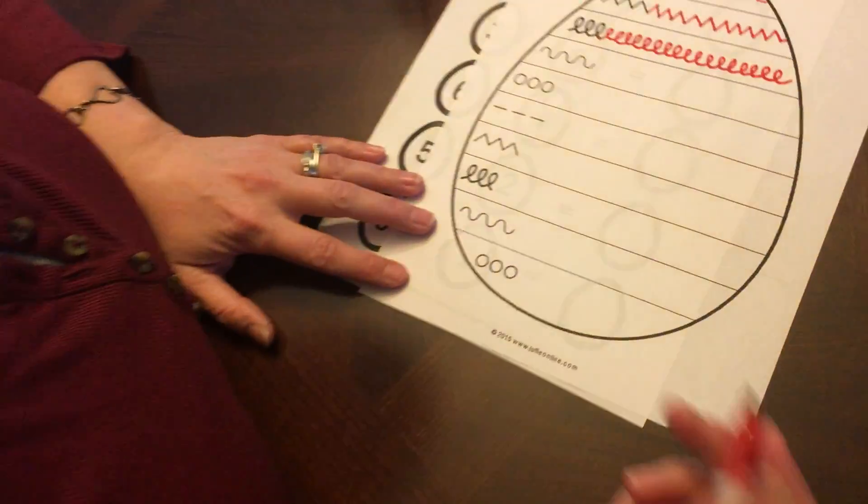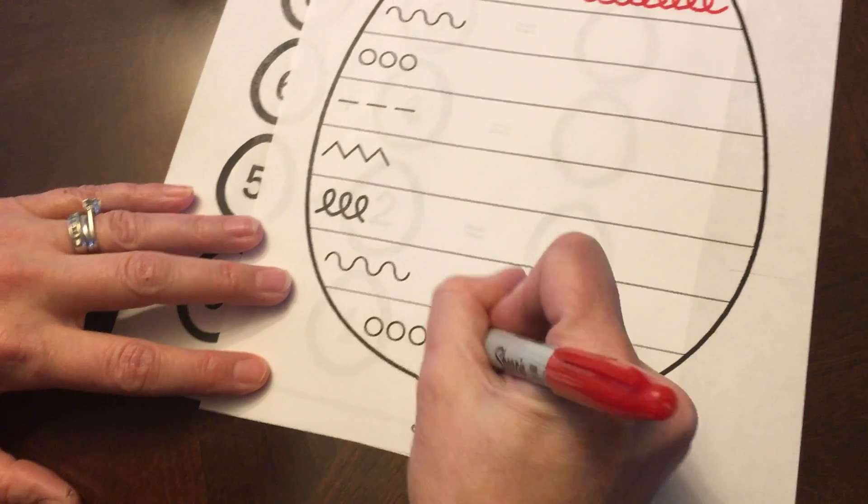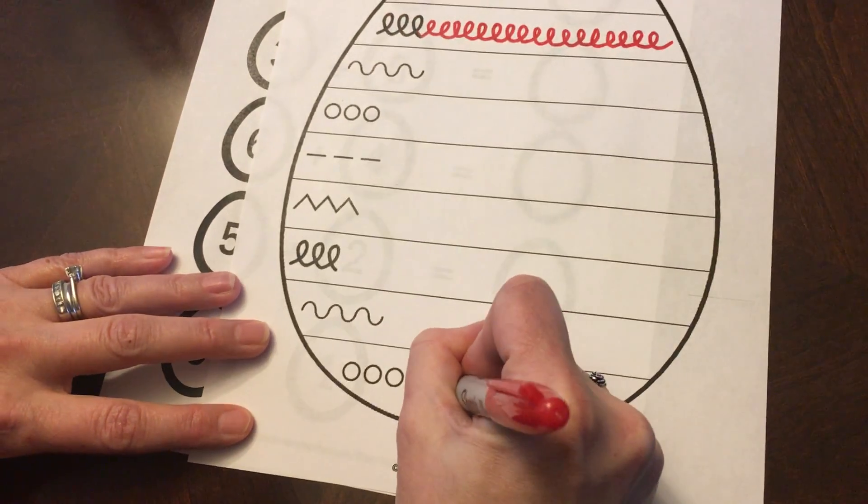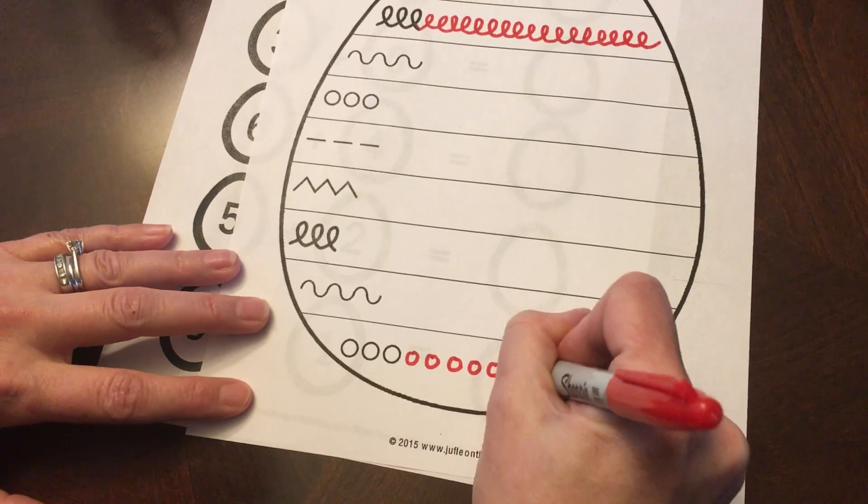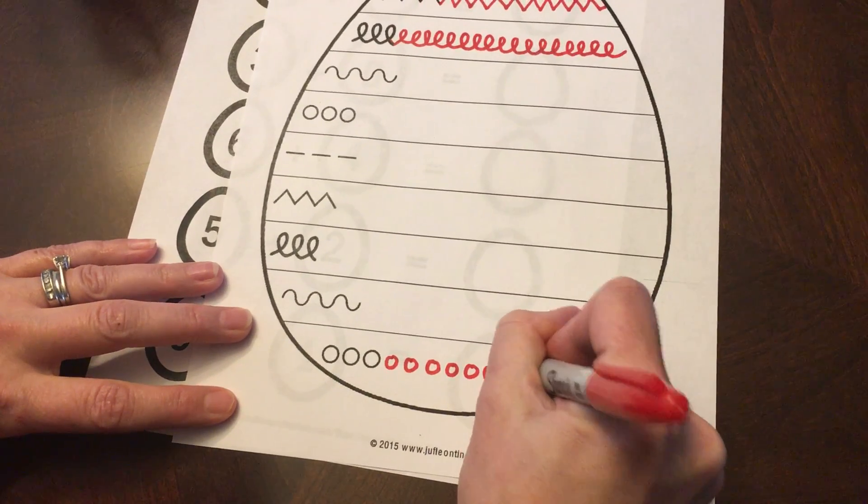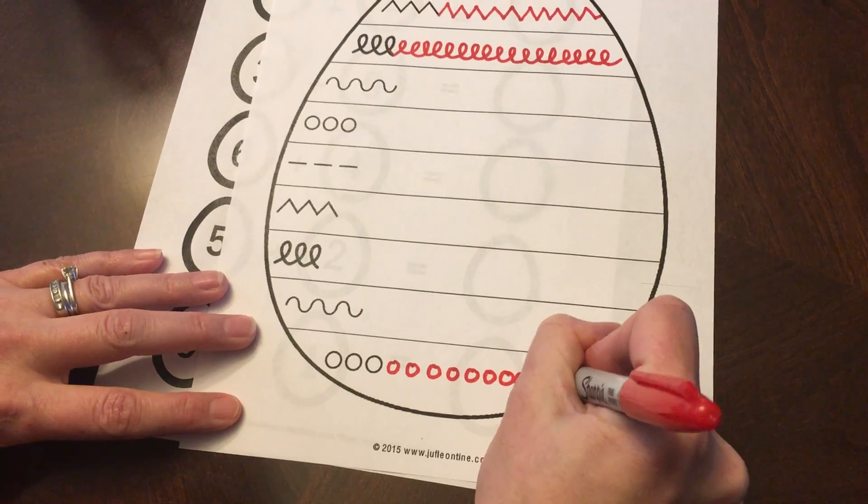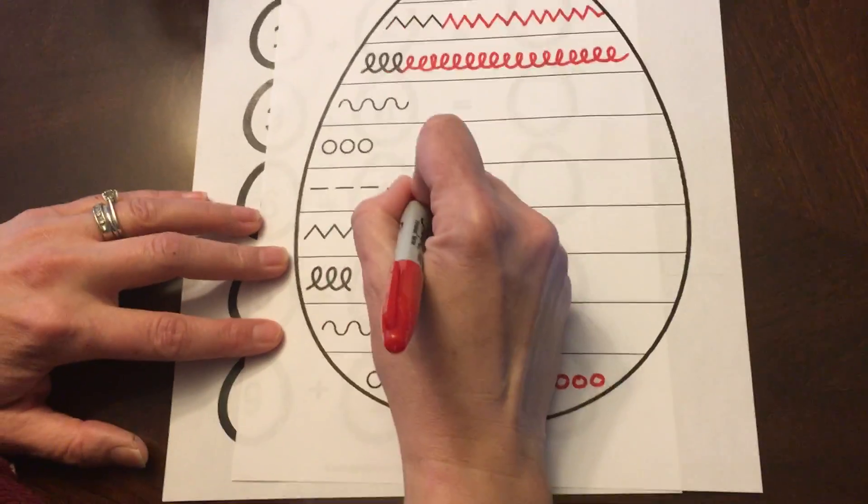There are little circles and I know I can draw little circles. Those are easy. So I'm gonna finish the bottom pattern. And oh, this one is easy - line.